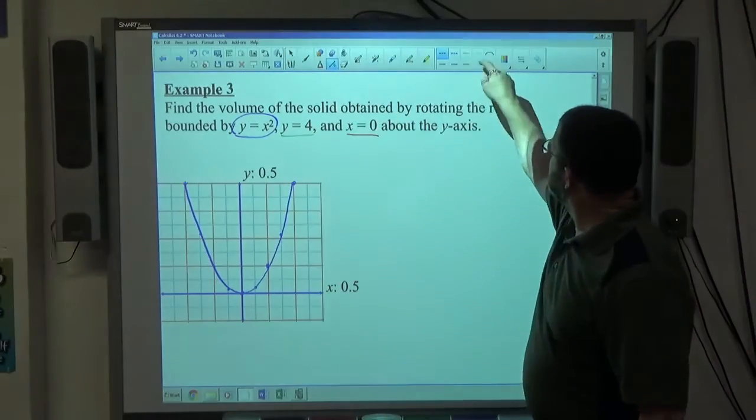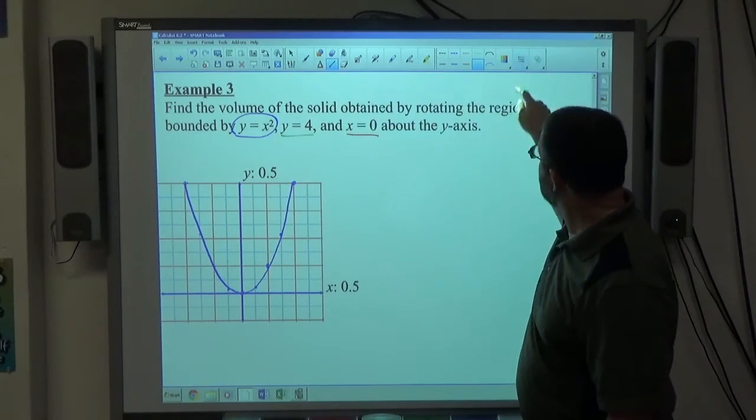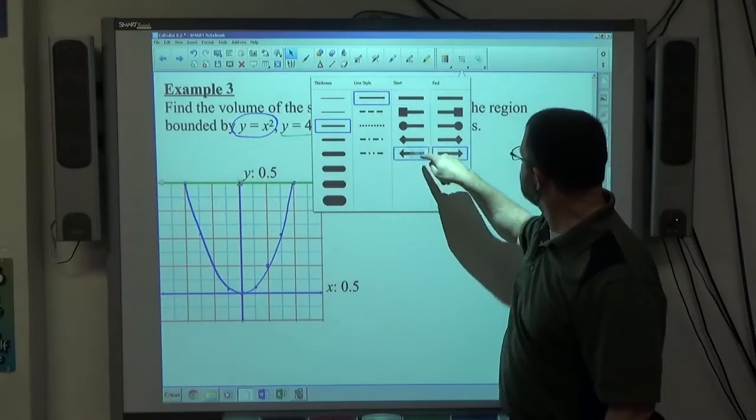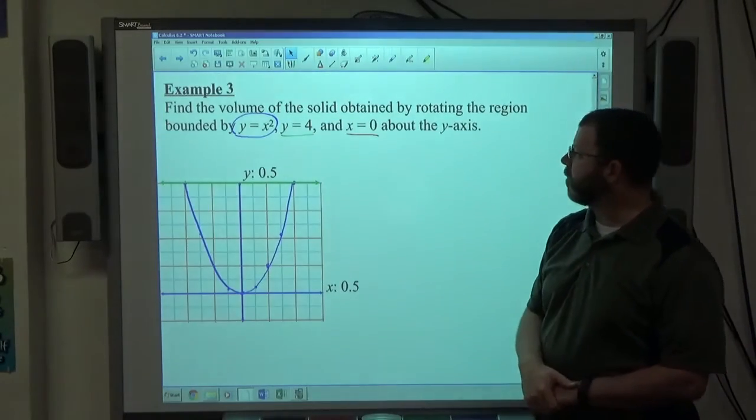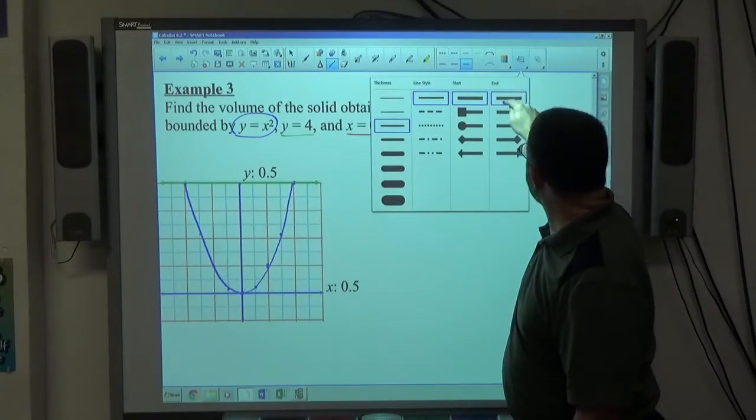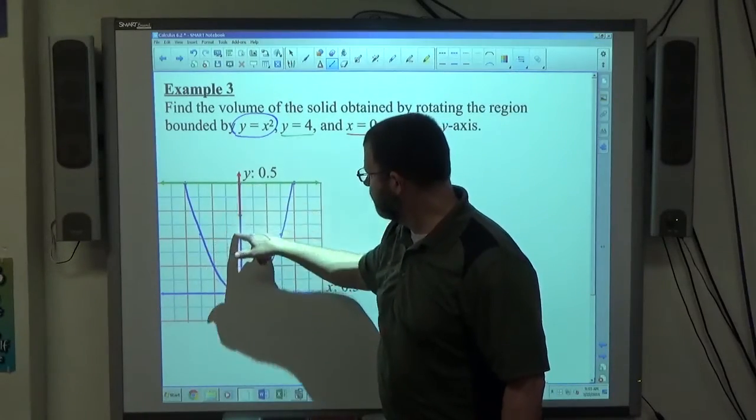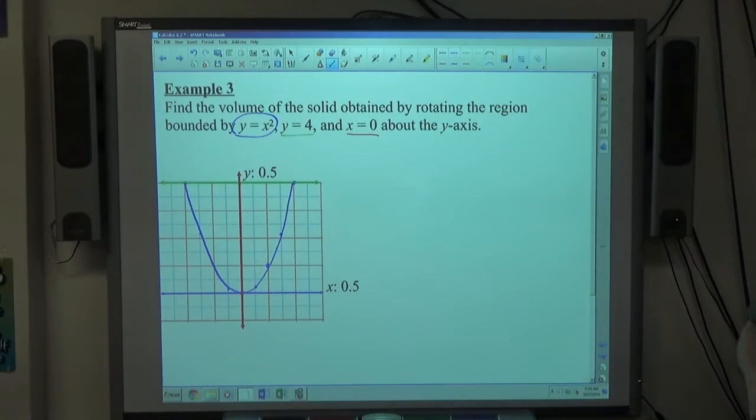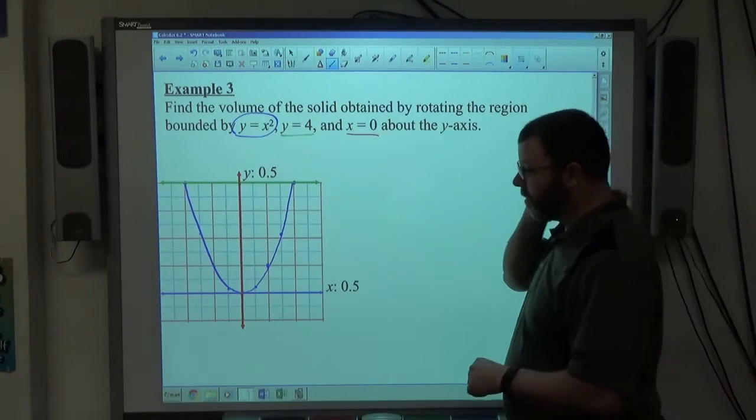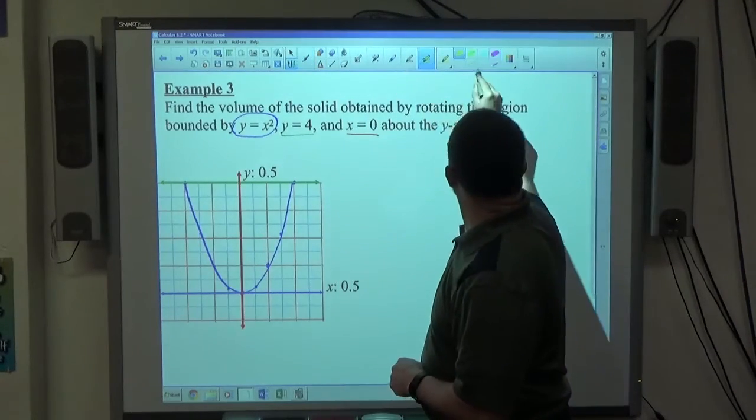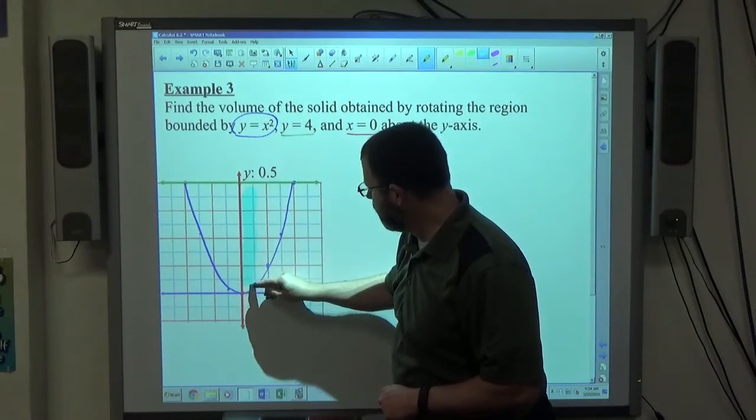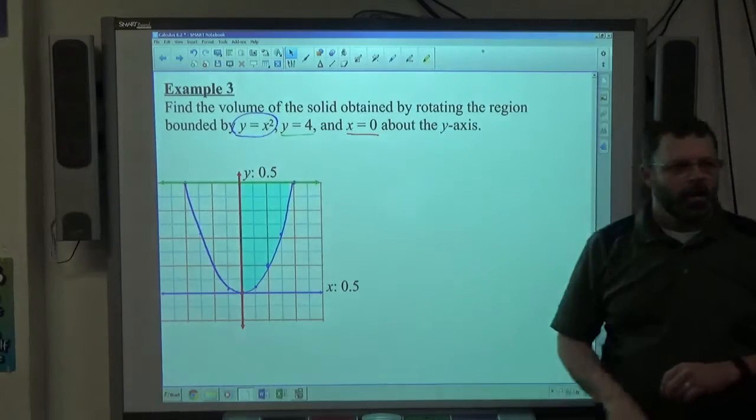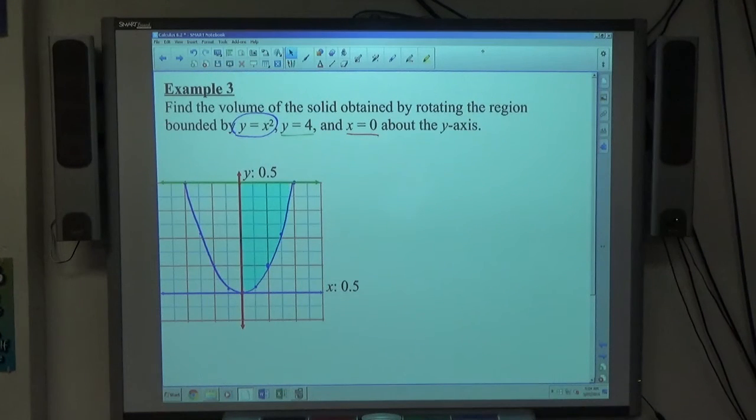If we look at y equals 4, it's just going to be a horizontal line at a height of 4. That green line is y equals 4. And x equals 0 is simply a vertical line right here. So we're looking at a region created by the 3, and we can make assumptions here. I would say that this is the region we're concerned with. Make the assumption that if they don't specify, the region is going to be within the first quadrant usually.